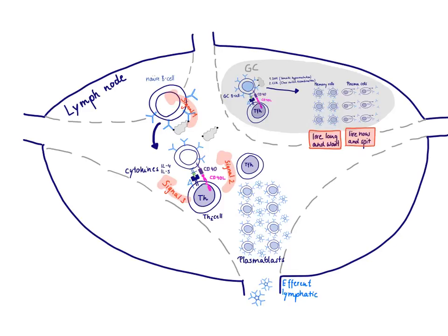I want to give memory cells the slogan: 'live long and wait.' After all the trouble we went through — all the activation, maturation, and differentiation processes — we have created a very good antibody, and we don't want these cells to die off immediately. We want them hanging around for a long time, because this invader could threaten us again, and this time we want to be ready and use the resources we've already generated.